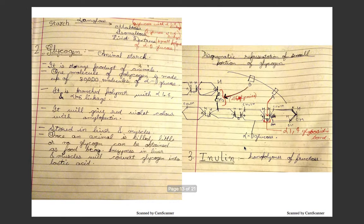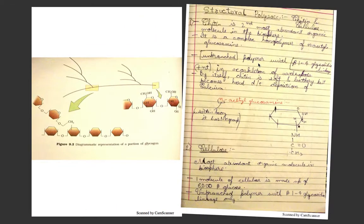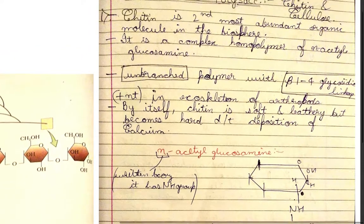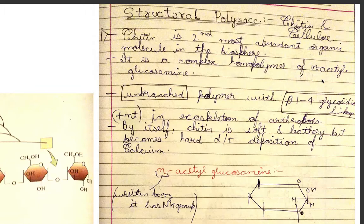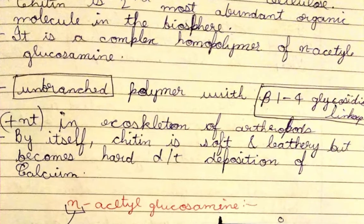Inulin is a homopolymer of fructose and is a storage product in dahlia and artichoke roots. Structural polysaccharides include chitin and cellulose. Chitin is the second most abundant organic molecule in the biosphere and is a complete homopolymer of N-acetyl glucosamine. It is an unbranched polymer with only beta-1,4 glycosidic linkage — no beta-1,6 — which is why it is unbranched.